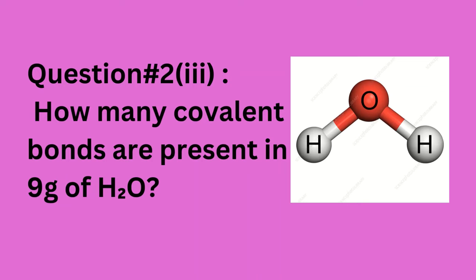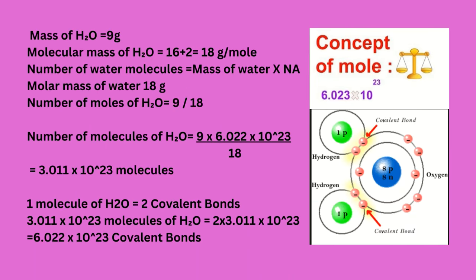Question number two, part three: how many covalent bonds are present in 9 grams of water (H₂O)? Mass of water = 9 g. Gram molecular mass of water = 16 + 2 = 18 g/mol. Number of moles of water = 9 ÷ 18. Number of molecules of water = 9 × 6.022 × 10²³ ÷ 18 = 3.011 × 10²³ molecules. One molecule of water has 2 covalent bonds, therefore 3.011 × 10²³ molecules = 2 × 3.011 × 10²³ = 6.022 × 10²³ covalent bonds.